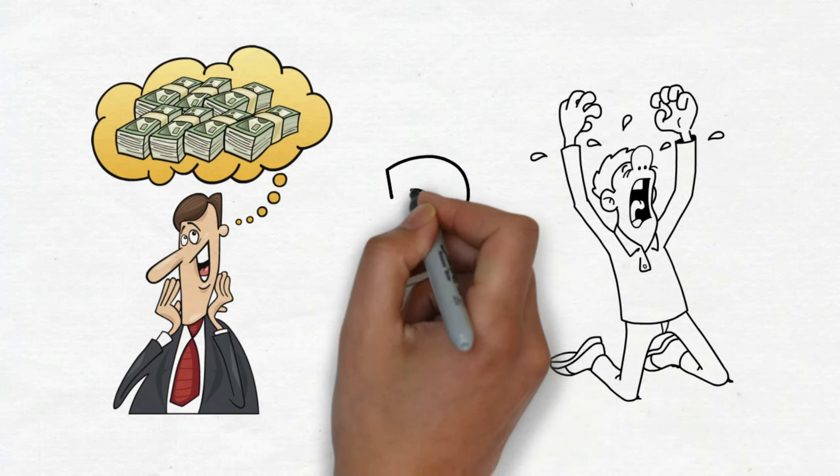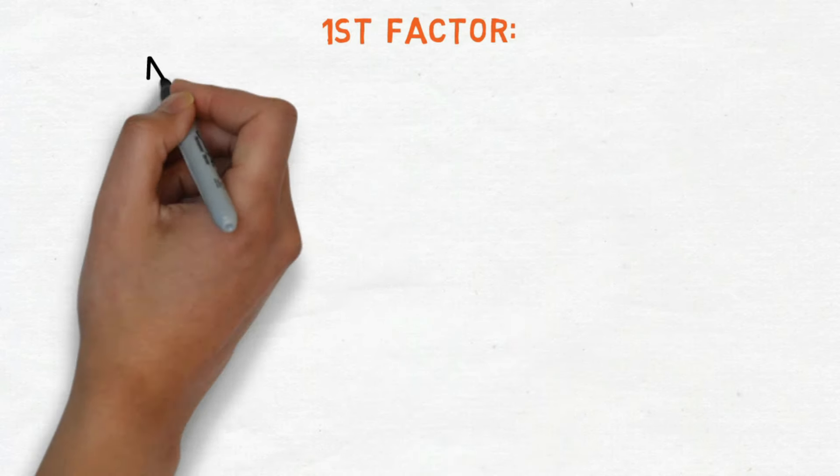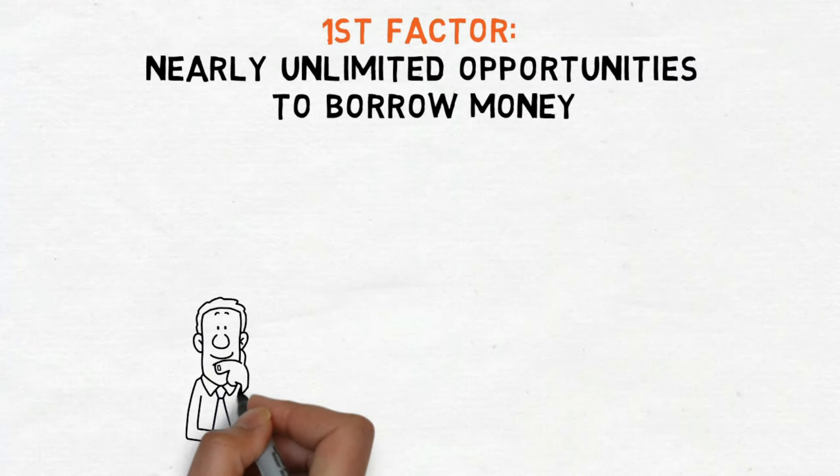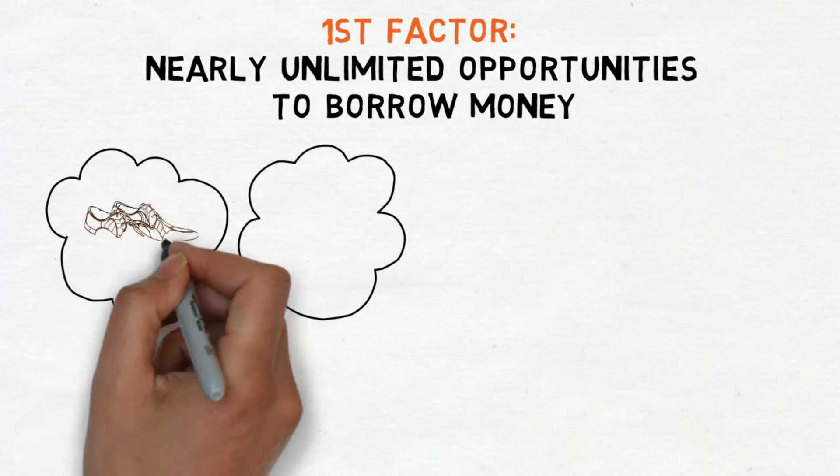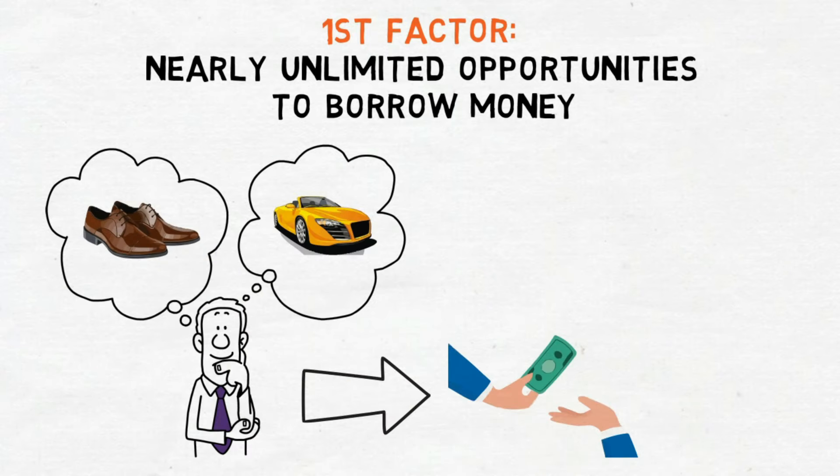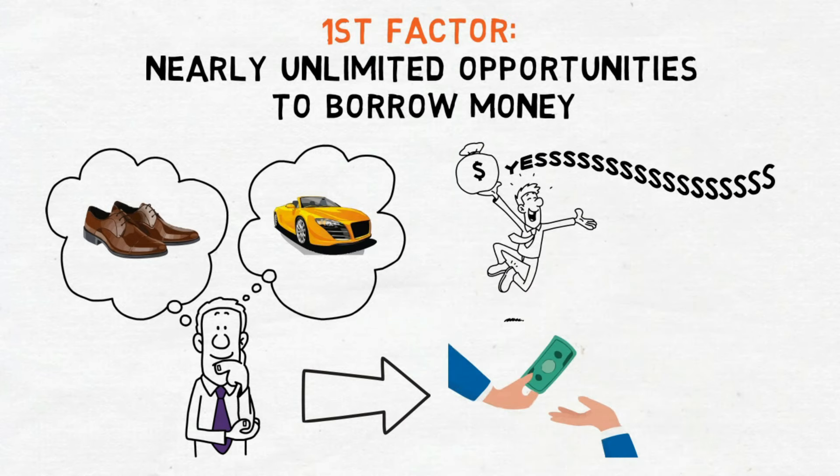So, why do so many people pretend to be rich nowadays? It can be attributed to the following two factors. The first factor is nearly unlimited opportunities to borrow money. When people want to buy things they can't afford, like fancy shoes or a luxury car, they often borrow money to get them. So when people can easily borrow money to buy things they can't really afford, it's easy for them to look like they're rich.